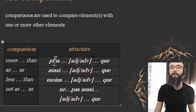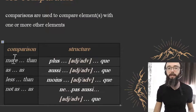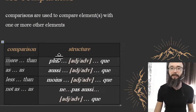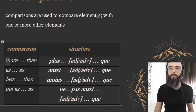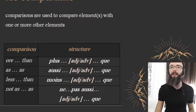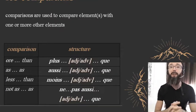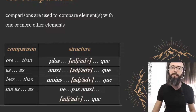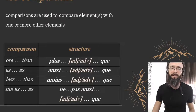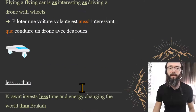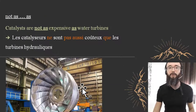Admittedly very easy, very similar to English. More than = 'plus que.' As as = 'aussi que.' Less than = 'moins que.' I hope I'm not going too fast — I have a tendency to speed up when I'm excited about a topic. If so, leave a comment and say 'take a chill pill, slow down!'